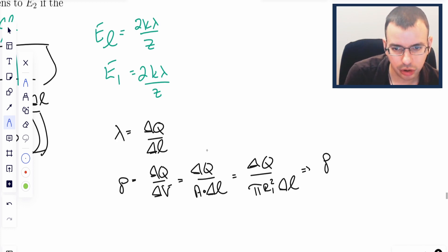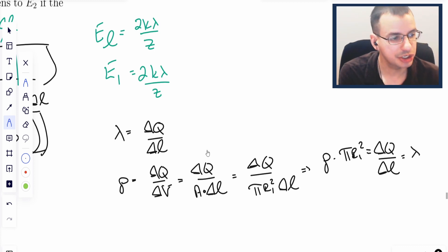So rho times pi R1 squared equals delta Q over delta L, and we know that's equal to lambda. So we just found a relationship between a volumetric charge density and a linear charge density for a cylinder.